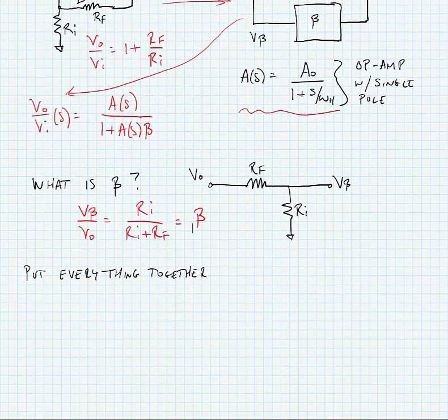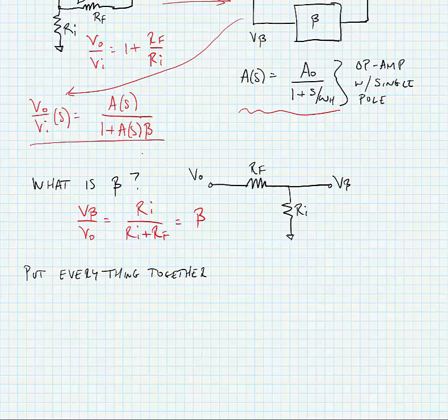If we substitute our values for A(s) and beta into this equation, we get the following.